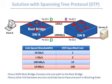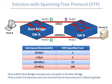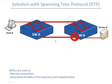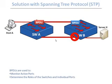To determine which port to block in a loop, we compare the priorities of both switches. The switch with lower priority — or if tied, lower MAC address — gets the designated port, and the other gets the blocking port. The spanning tree monitors the topology and detects network changes by exchanging small packets called bridge protocol data units, or BPDUs.